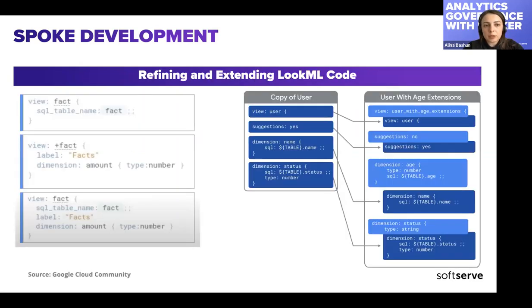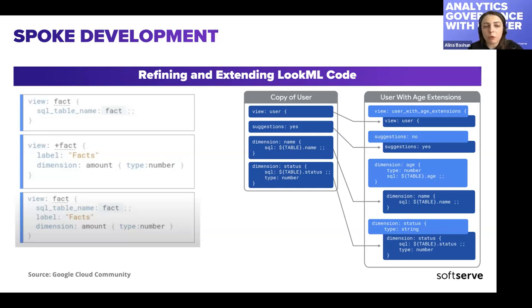You'll also have an alert when there are changes, if you're pointed to master and a new version was deployed. Once you set up this project import, you've got the semantic layer of the Looker hub imported to your project as read-only access. Then you can reuse, refine, or extend those metrics. When reusing, you simply include the file into your spoke model. When refining, you can override some parameters — not all can be overridden, some are additive — but many are, and you can change labels, descriptions, types, and add dimensions to the view.